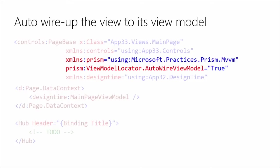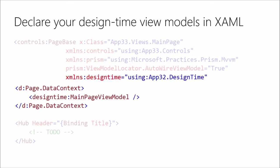You can't think of a reason to set AutoWireViewModel to false — the only reason would be if you're using a view that didn't have a view model. Next is handling design time. You create a namespace for design time and reference it out to the design time namespace in your code. Then you say D:Page.DataContext — that D colon is important because it means at runtime, throw this away. D colon is only for design time. Here you're setting the data context at design time to your design time view model.